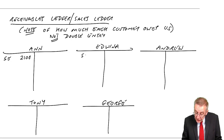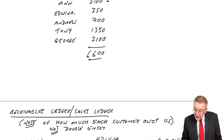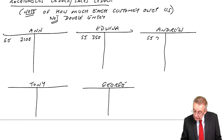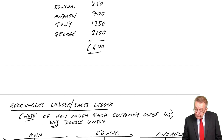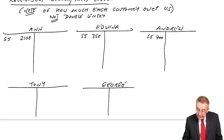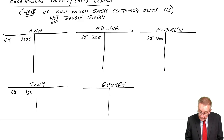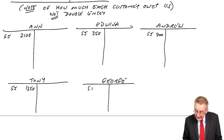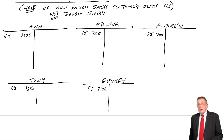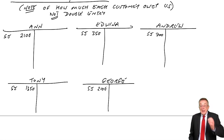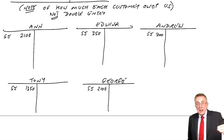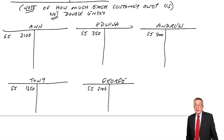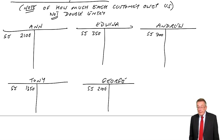And similarly for all of them: Edwina owes us £350, Andrew £700, Tony £1,350, George £2,100. Those entries have been made as soon as we made the sale. When you sell to Anne, it's listed in the Sales Journal — immediately you put £2,100 on Anne's page.